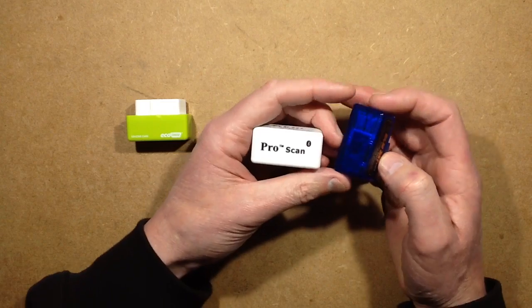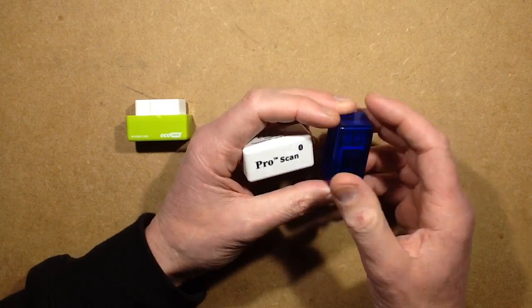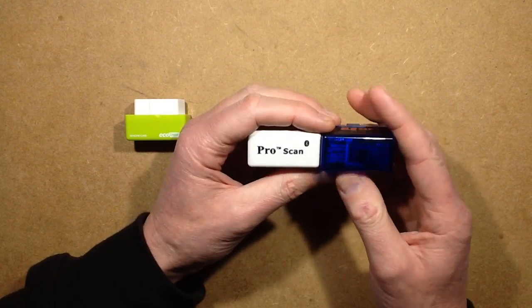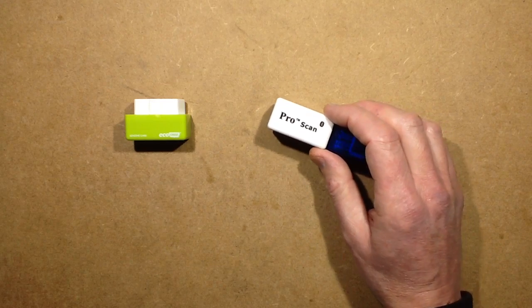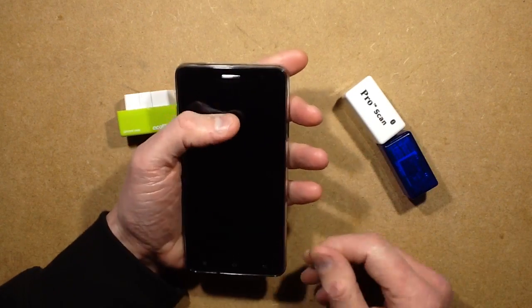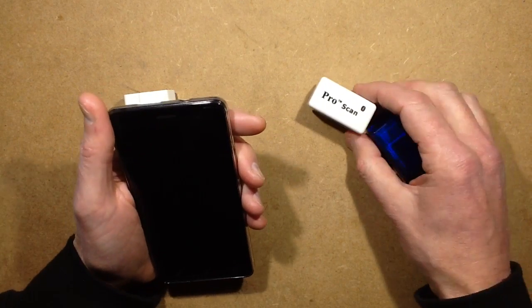These things all have the potential to do horrific things, but the idea of OBD2 is that all modern cars have a little socket in the vicinity of the driver. These Bluetooth ones will connect to your Android phone.